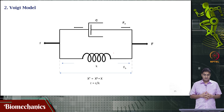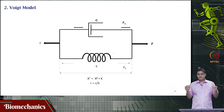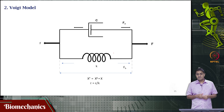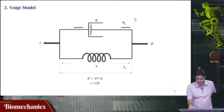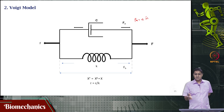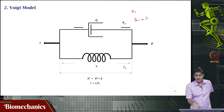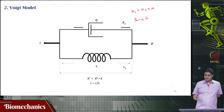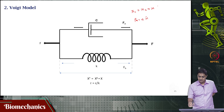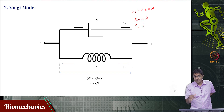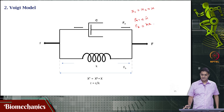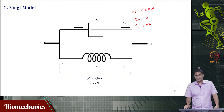When you pull this model on two sides, the deformation on both sides will be the same, but the force felt by each of the two elements will be different. The force felt at the dashpot, F₁, is C times x-dot. The force felt at the spring, F₂, is k times x. Here x₁ and x₂ are both equal to the same x.